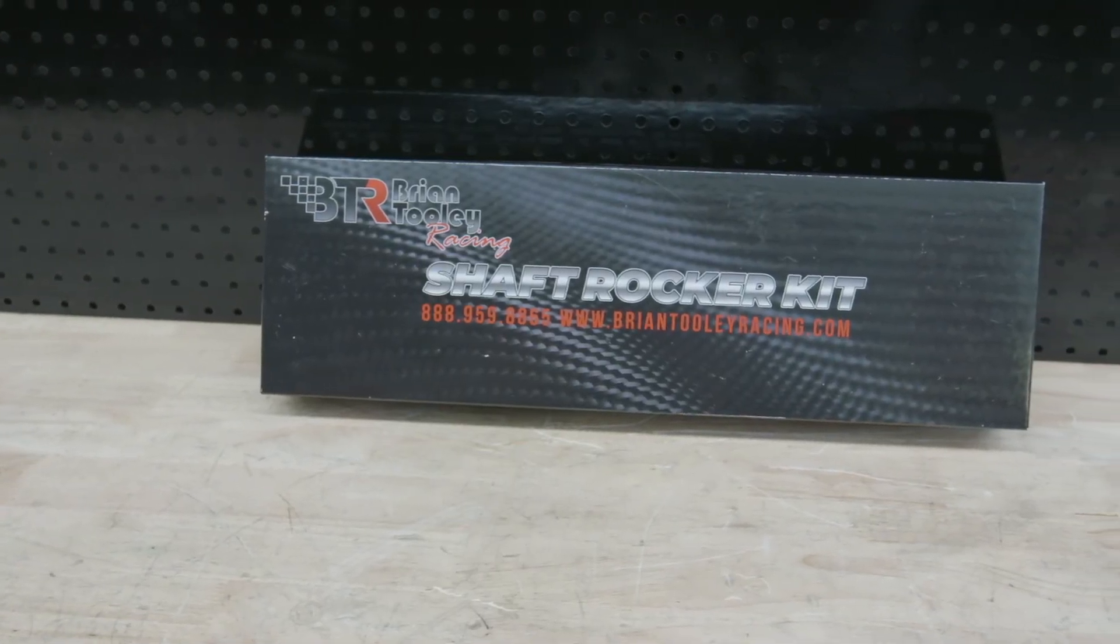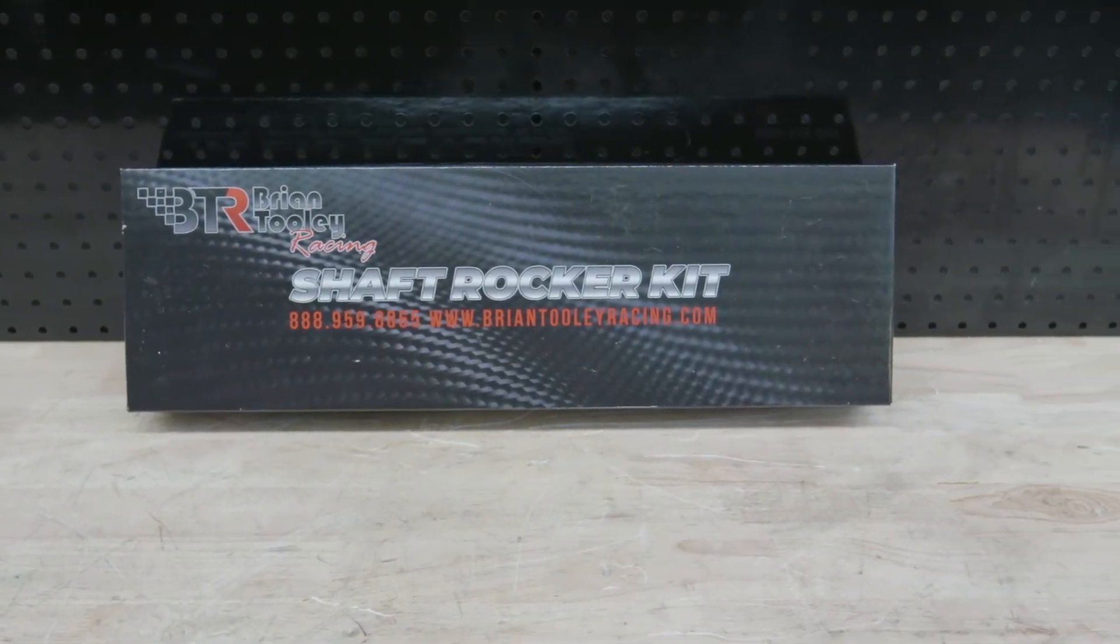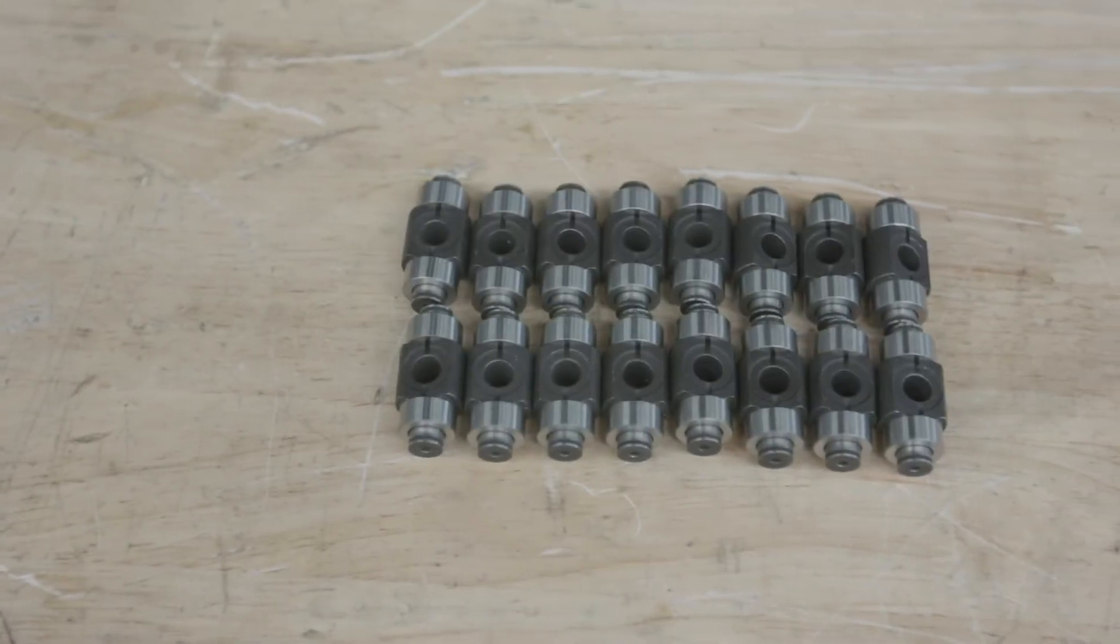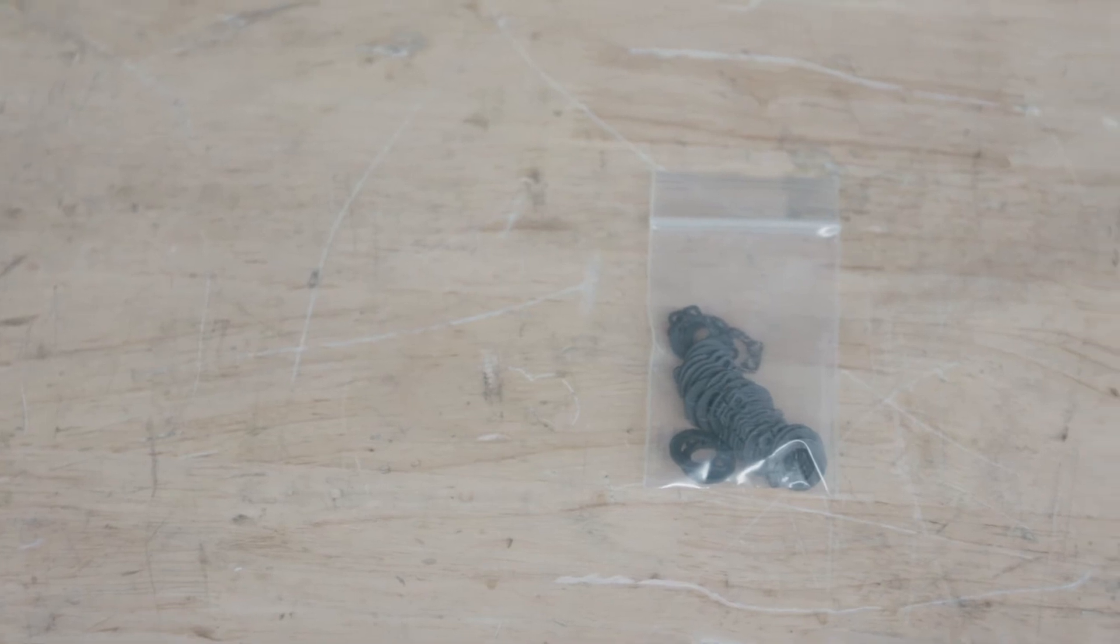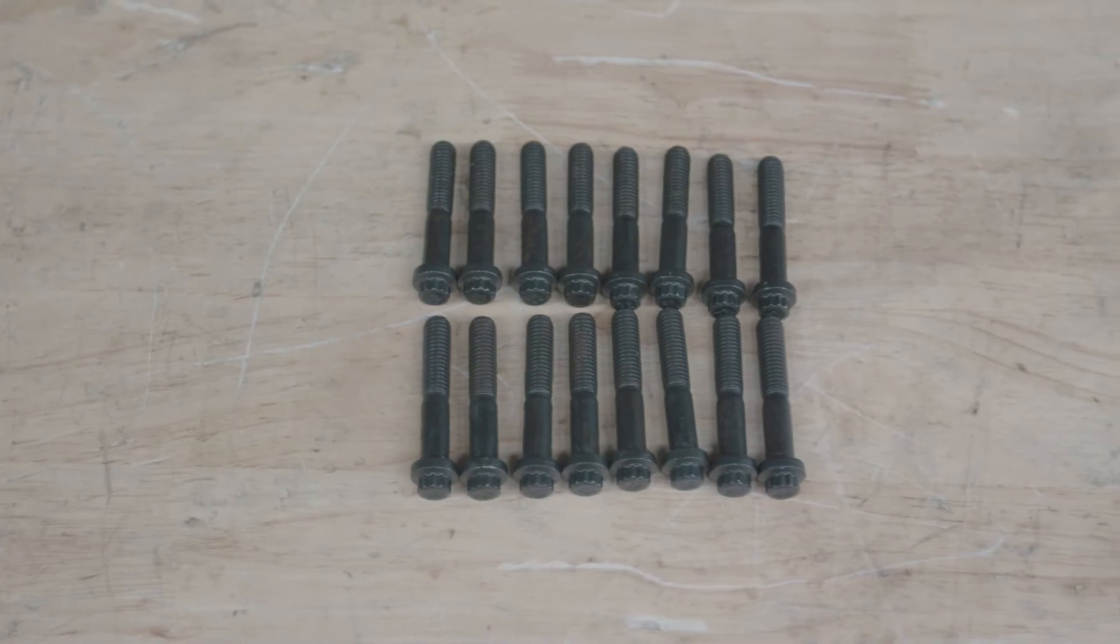Let's take a look at the Brian Tooley Racing Upgraded Trunnion Kit. In the kit, you have upgraded trunnion bodies, upgraded roller bearings, circlips that help hold the bearing into place, new washers and a new rocker bolt, which is stronger and improved.